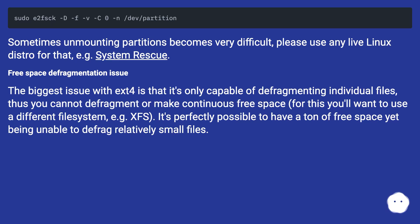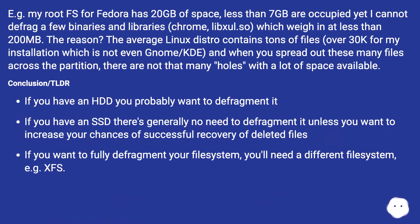Free space defragmentation issue: the biggest issue with ext4 is that it's only capable of defragmenting individual files; thus you cannot defragment or make continuous free space — for this you'll want to use a different file system, e.g. XFS. It's perfectly possible to have a ton of free space yet be unable to defrag relatively small files. For example, my root filesystem for Fedora has 20 GB of space, less than 7 GB are occupied, yet I cannot defrag a few binaries and libraries — Chrome, libssl.so — which weigh in at less than 200 MB. The reason: the average Linux distro contains tons of files — over 30K for my installation — and when you spread out that many files across the partition, there are not that many holes with a lot of space available.